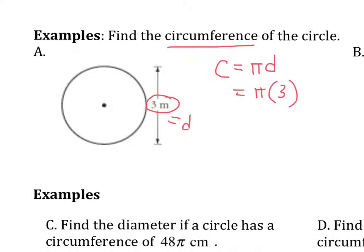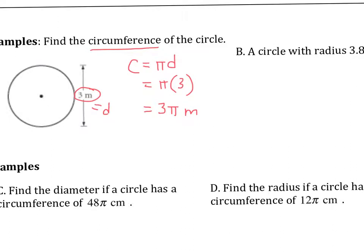And now, when I simplify, my exact answer is 3 pi meters. That is my exact answer. So this is one answer — my circumference is 3 pi meters.